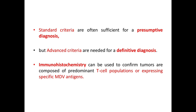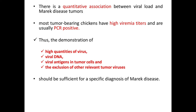Standard criteria are often sufficient for a presumptive diagnosis, but advanced criteria are needed for a definitive diagnosis. Immunohistochemistry can be used to confirm that tumors are composed of a T cell population or are expressing specific MDV antigens. There is a quantitative association between viral load and Marek's disease tumors; most tumor-bearing chickens have high viremia titers and are usually PCR positive. Thus, demonstration of high quantities of viral DNA or viral antigen in tumor cells, and exclusion of other relevant tumor viruses, should be sufficient for a specific diagnosis of Marek's disease.